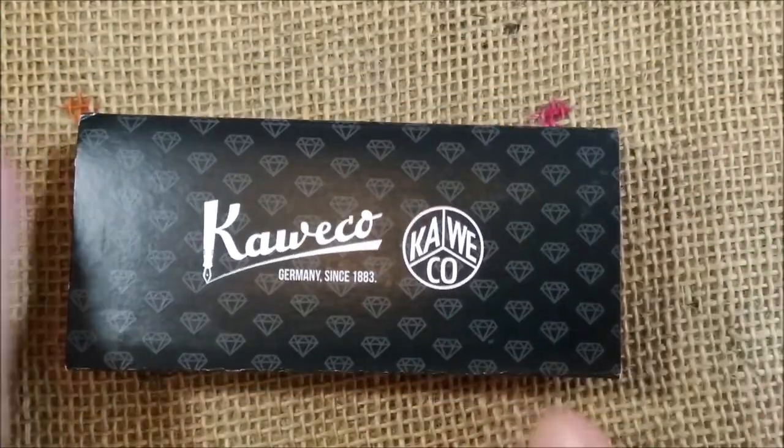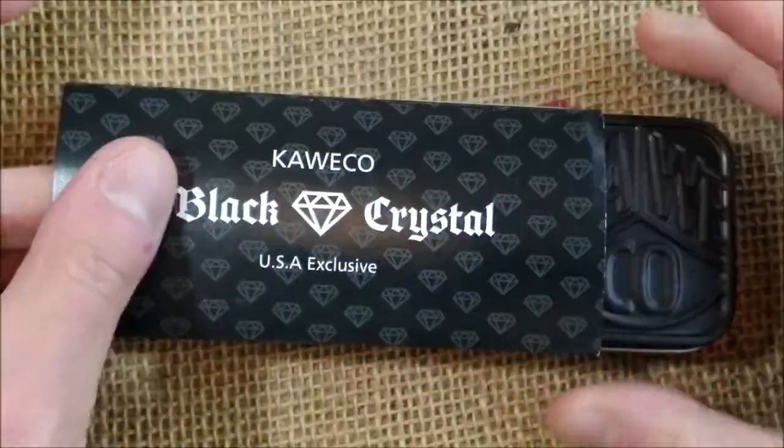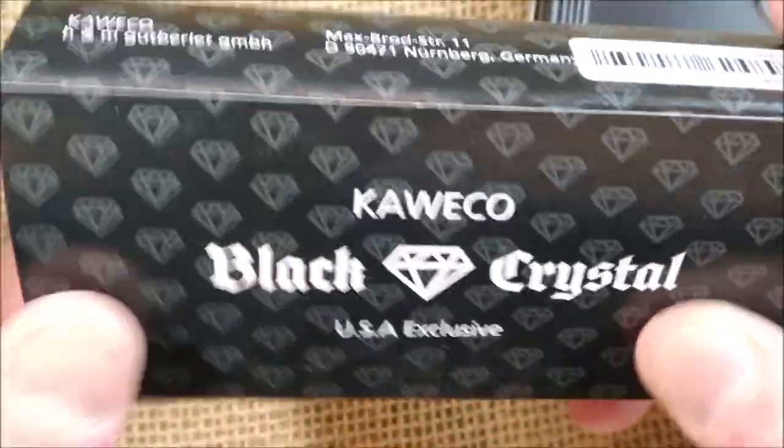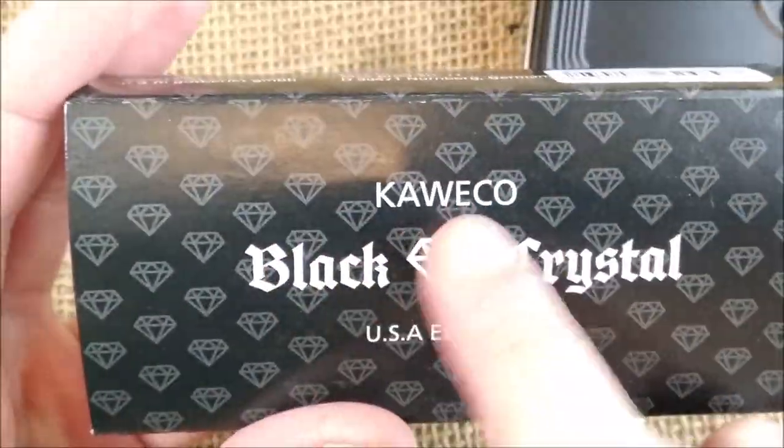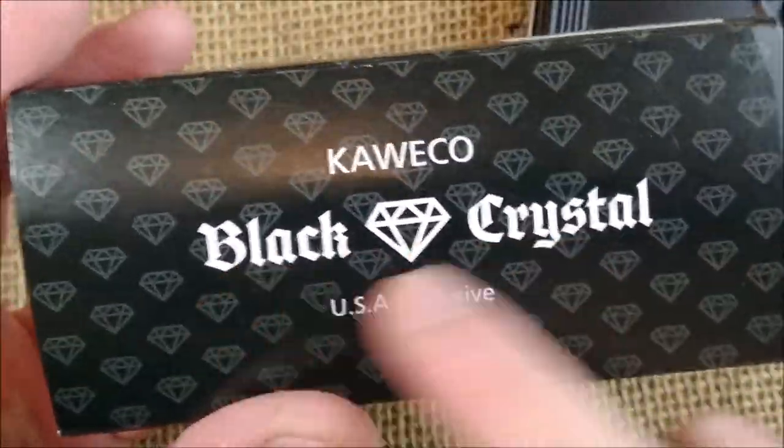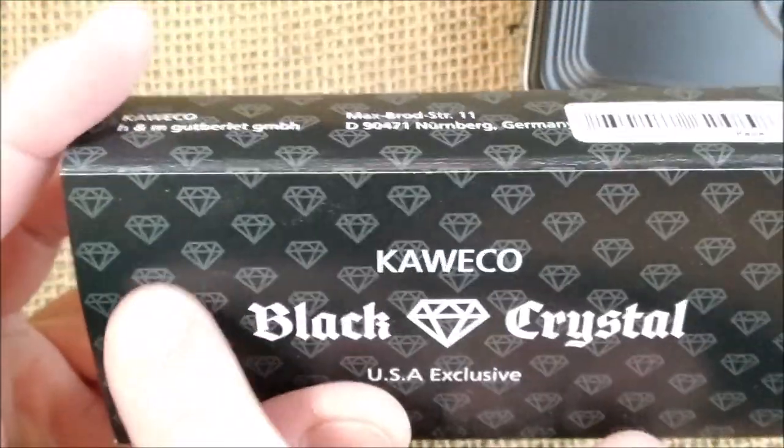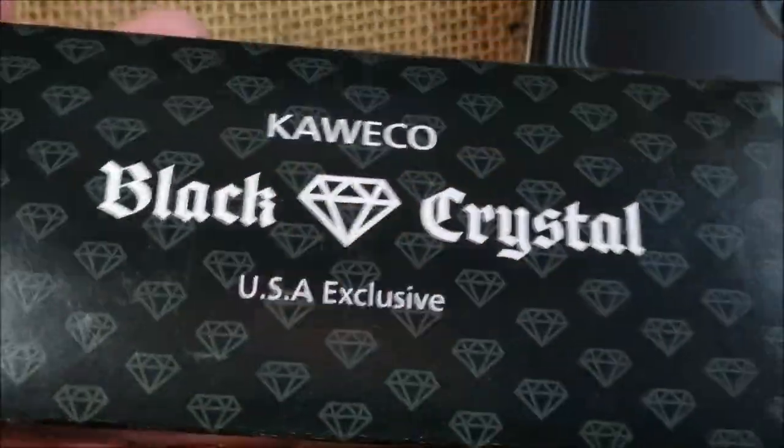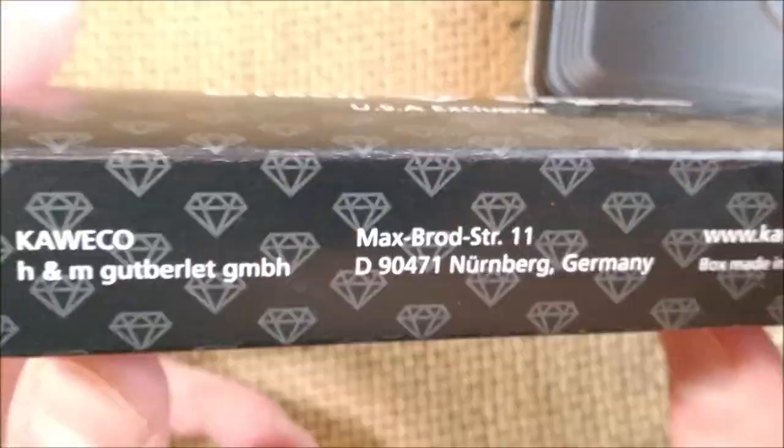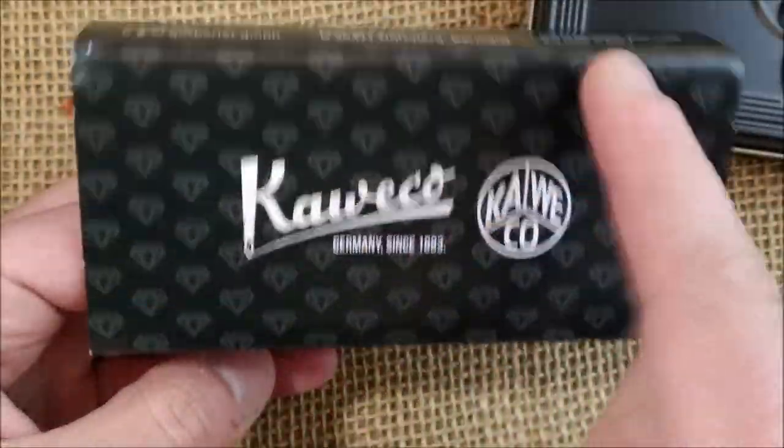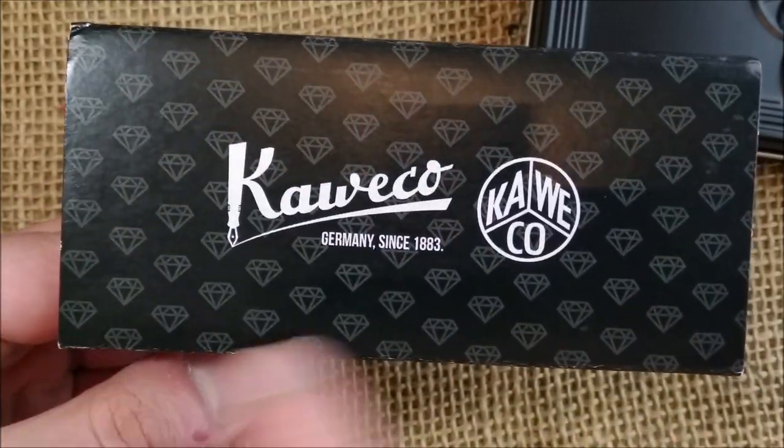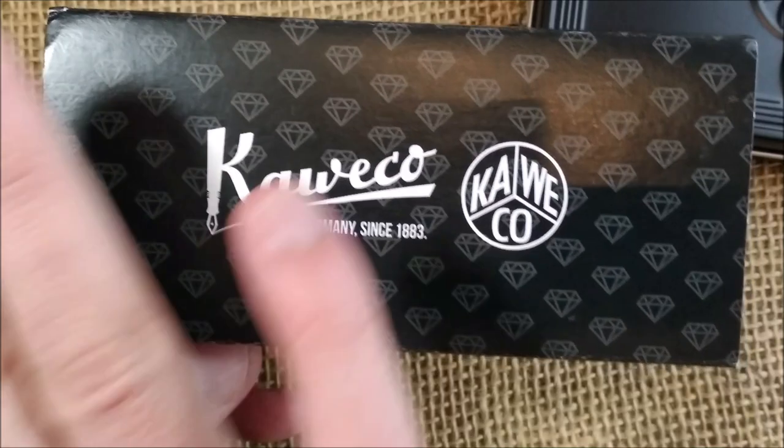The pen comes inside a black tin box that is inside this paper sleeve, and this paper sleeve has Kaweco Black Crystal, which is the name of this edition. It has the black sleeve with crystals or diamonds and it says USA exclusive. Then the information of Kaweco on this side, except for the crystals that are drawn on the bottom, on the background.